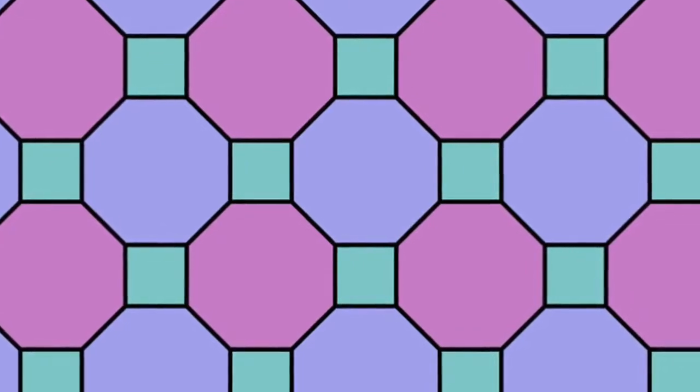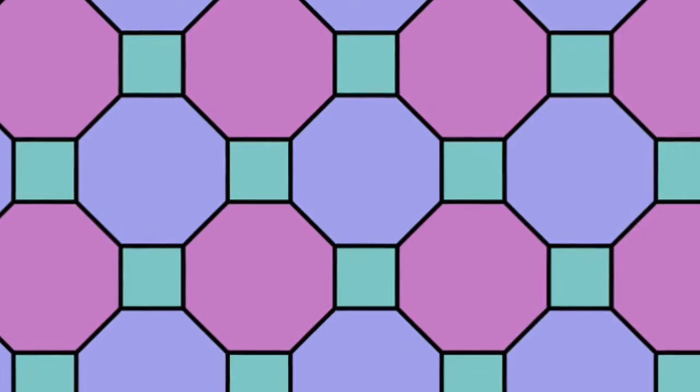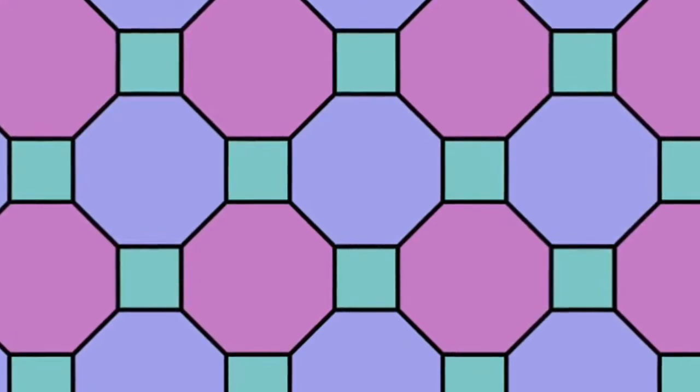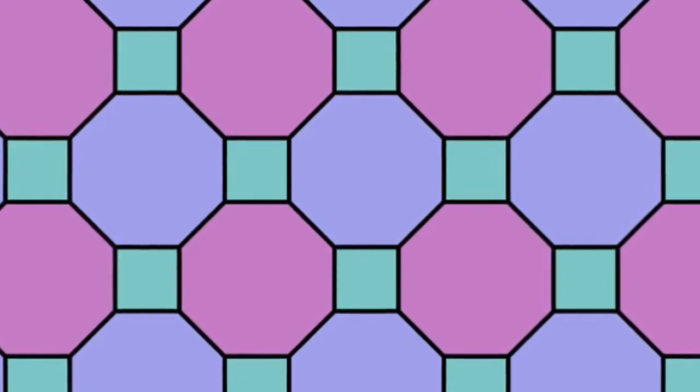Among the other semi-regular tilings are two that involve squares and triangles, and one made from dodecagons — that's 12-sided shapes — squares and hexagons. Irregular tilings include every other possibility; they can be made from tiles of any shape, not just regular polygons or even shapes that have straight sides.